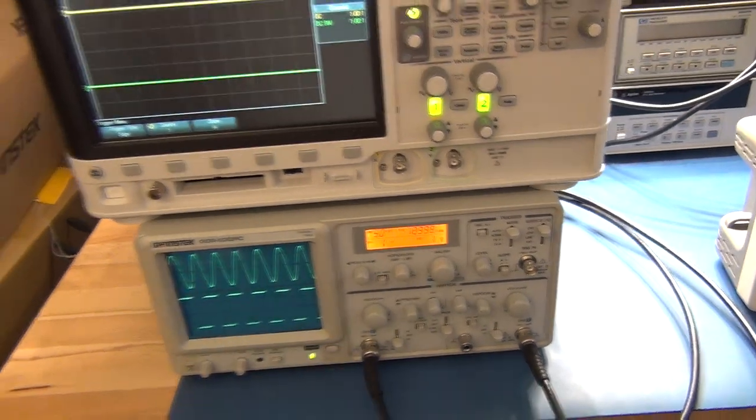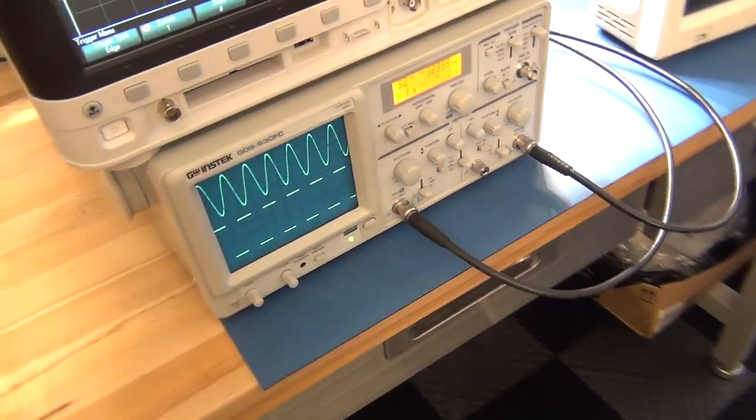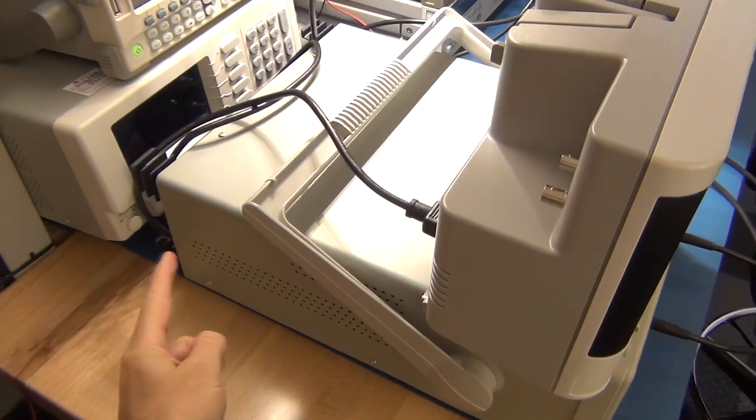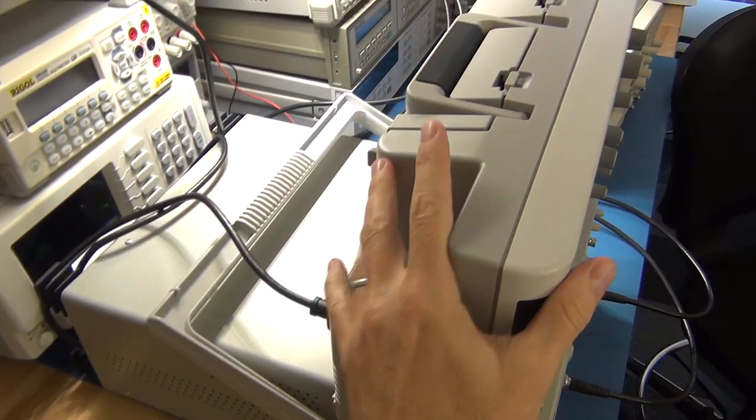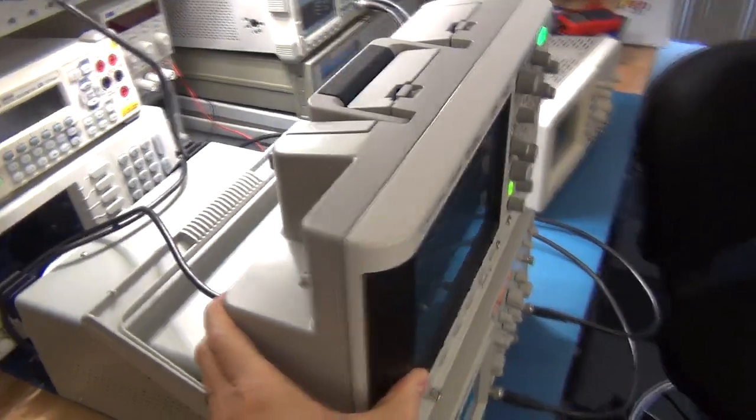However, because it's got a cathode ray tube, those are heavier and require a fair bit of space. If you look at the size of the box, it goes a long way back. If you compare it to my Agilent, how nice and neatly the footprint of the Agilent.